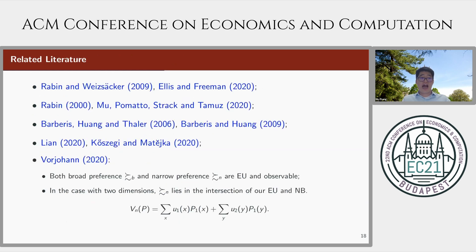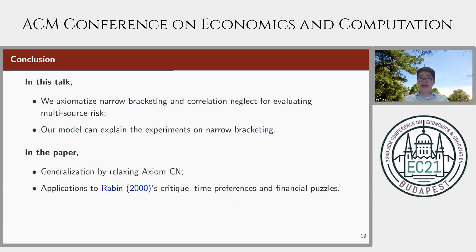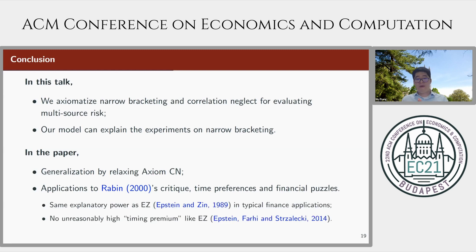Let me skip the related literature and conclude. In this talk, we axiomatize narrow bracketing and correlation neglect for evaluating multisource risk, and our model can explain experiments on narrow bracketing. In the paper, we consider generalization by relaxing the axiom of correlation neglect, apply the model to Rabin's critique, time preferences, and financial puzzles. In particular, we propose a new model sharing the same explanatory power as Epstein-Zin in typical finance applications, while not subject to recent critiques on Epstein-Zin for its high timing premium, as discussed in Epstein, Fahey, and Sreleski. Thank you, and I welcome you to join my coffee break and watch party.